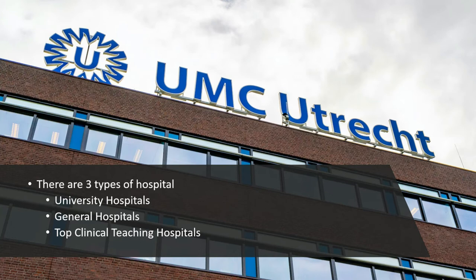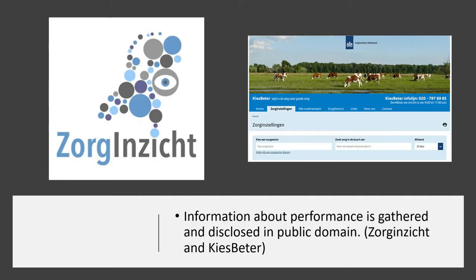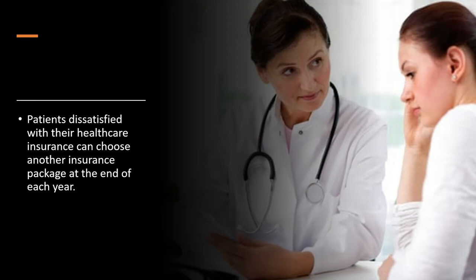There are three types of hospitals in the Netherlands: university hospitals, general hospitals, and top clinical teaching hospitals. The most incident package allows patients to choose where they want to be treated. Information about performance is gathered and disclosed in the public domain. Patients dissatisfied with their healthcare insurance can choose another insurance package at the end of the year.